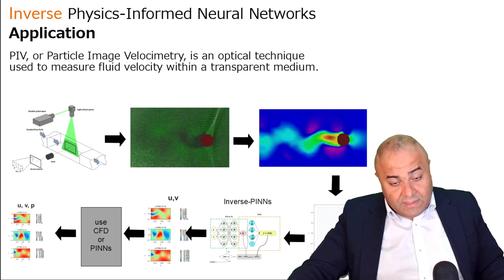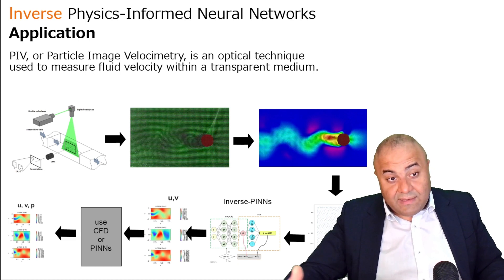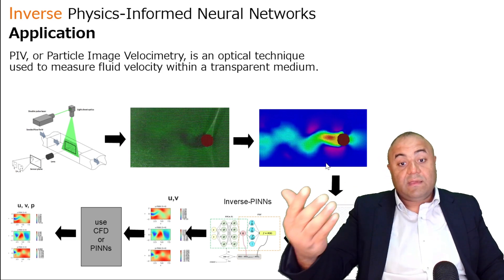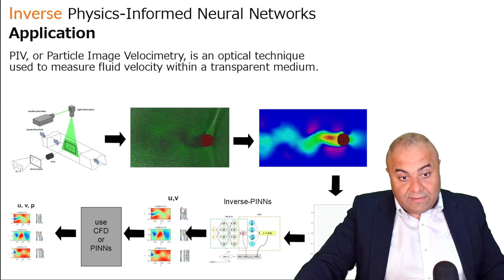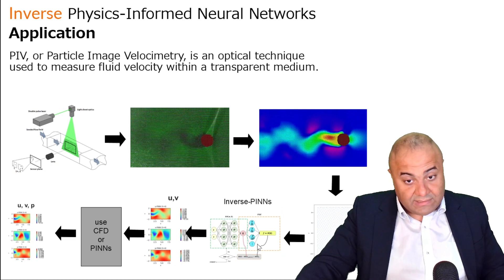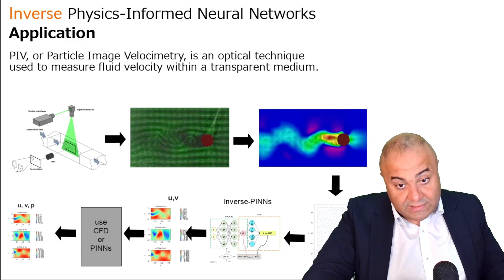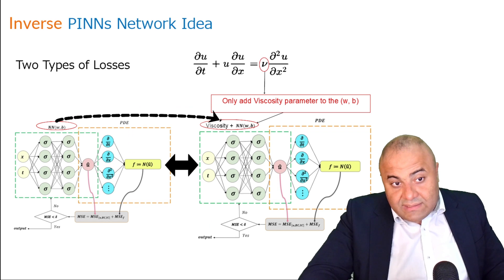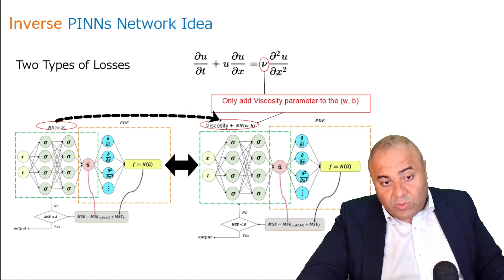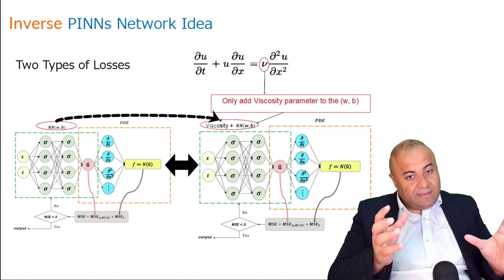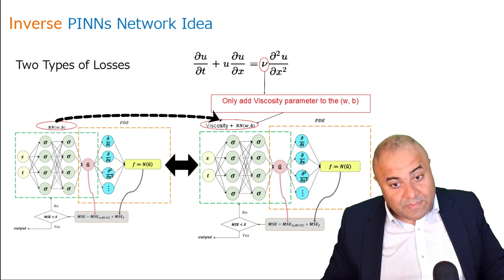In this course, we will get a velocity field and predict the viscosity using inverse PINNs. Now, for the inverse PINNs network, do we really need something called an inverse PINNs network? The reality is we don't — what we need is to take the PINNs network and simply modify it a bit.